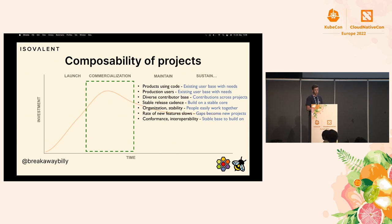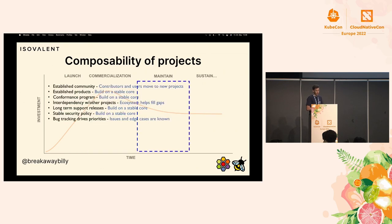As the rate of new features slows, you start to see some of these gaps becoming new projects. Things that people want and need may become projects by themselves. And once you have conformance and interoperability, you have a stable base for other projects to build on top of — think about how many things are built on top of Linux because it is almost a universal computing platform. In the maintain phase, contributors and users can move to these new projects, and you have security policies and bug tracking across the ecosystem.